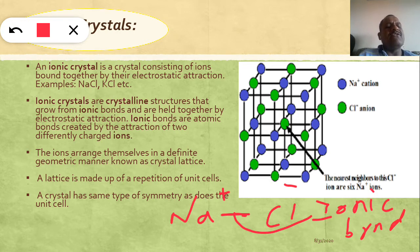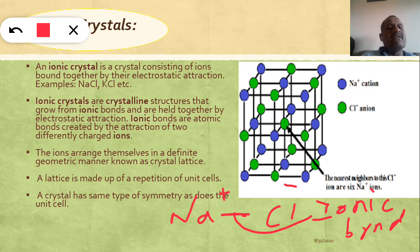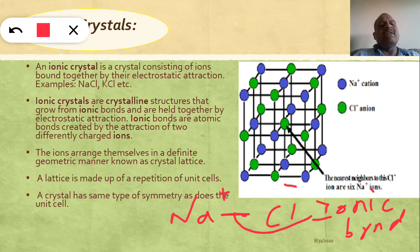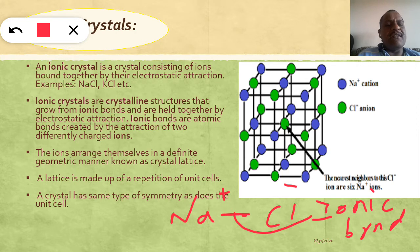An ionic bond is the bond between two oppositely charged ions held together by electrostatic force of attraction. Ionic bonds are atomic bonds created by the attraction of two oppositely charged ions. You can see here that Na+ and Cl− are arranged in the crystal lattice by electrostatic force of attraction. For the formation of the three-dimensional NaCl solid, there is an arrangement where alternate ions come together and are held together by a strong force of attraction, so ions are arranged in a definite geometry known as a crystal lattice.